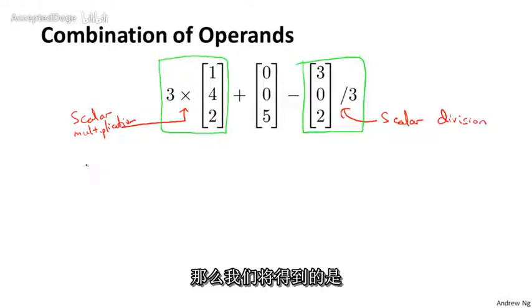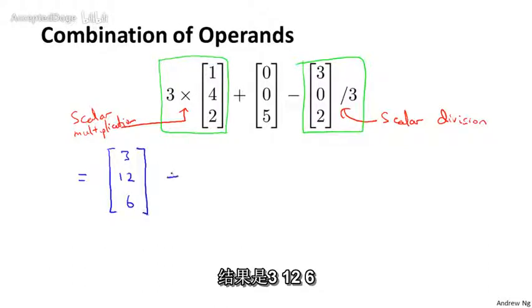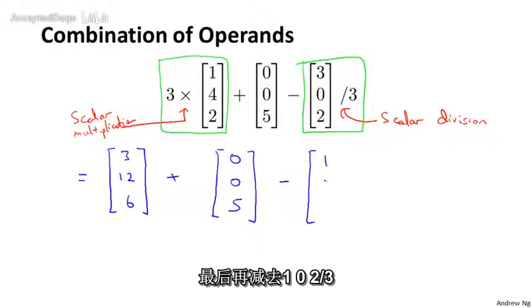And so if we evaluate these two operations first, then what we get is this thing is equal to 3 times that vector is 3, 12, 6 plus my vector in the middle, which is 0, 0, 5 minus 1, 0, 2 thirds, right?